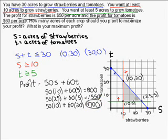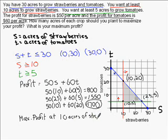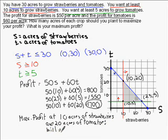So apparently I make the most money if I plant 10 acres of strawberries and 20 acres of tomatoes. Maximum profit at 10 acres of strawberries and 20 acres of tomatoes will make $1,700.